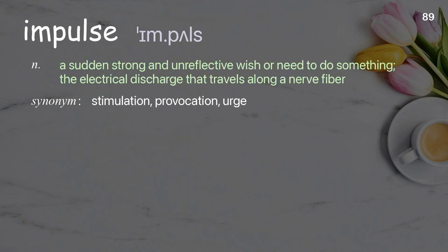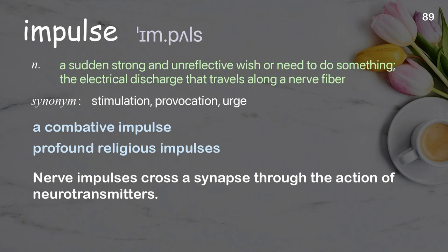Impulse: a sudden strong and unreflective wish or need to do something; the electrical discharge that travels along a nerve fiber. Examples: a combative impulse, profound religious impulses. Nerve impulses cross a synapse through the action of neurotransmitters.